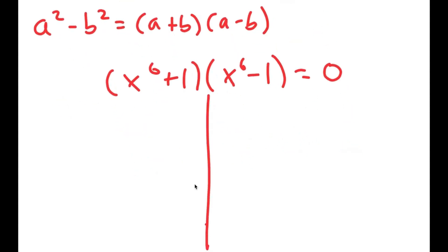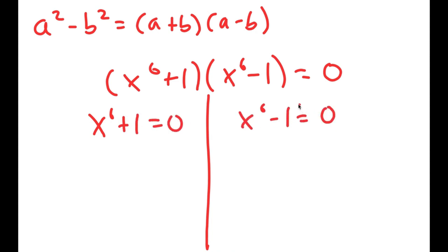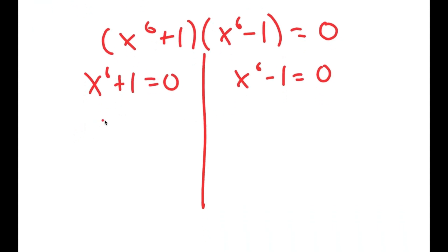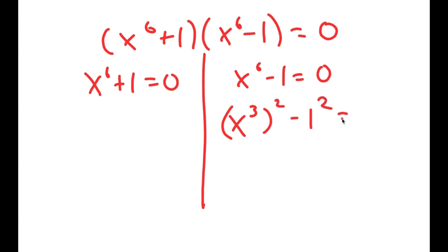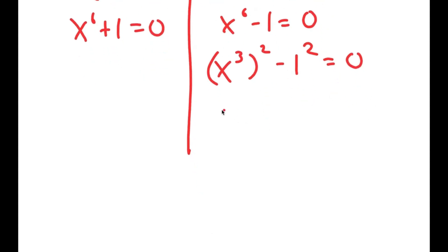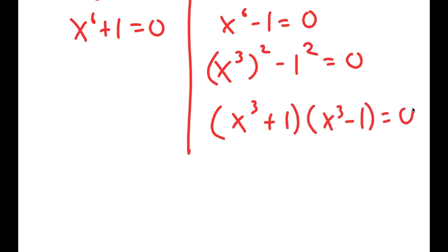So this gives me two equations: x to the power of 6 plus 1 equals 0, and x to the power of 6 minus 1 equals 0. Now I'm going to do the same thing again — rewrite x to the power of 6 minus 1 equals 0 as x to the power of 3, squared, minus 1 squared equals 0, so I can use this property again and get x to the power of 3 plus 1 times x to the power of 3 minus 1 is equal to 0.